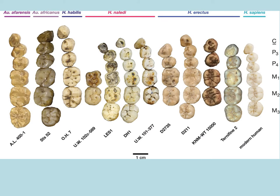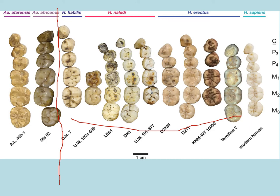Teeth are under tight genetic control, so they're a great way for a paleontologist to orient where a species may be. Looking at afarensis and africanus — both Australopithecine species — teeth are a little bigger but morphologically similar. When we get into Homo habilis, Homo naledi, Homo erectus, and Homo sapiens, the teeth are basically the same size. This is why we can draw the genus line right here between the genus Homo and our Australopithecines.